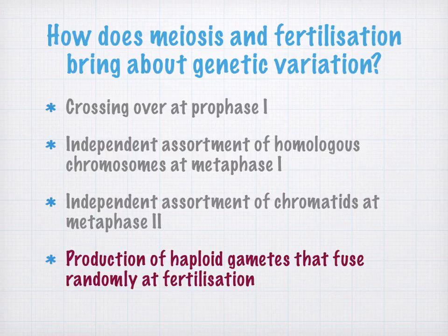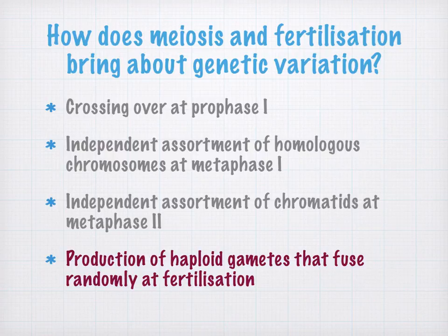Lastly, you have the production of haploid gametes that fuse randomly at fertilization. The haploid gametes produced by meiosis must fuse to restore the diploid state. Each gamete has a different makeup, and their random fusion therefore produces variety in the offspring. Where the gametes are from different parents, two different genetic makeups are combined, so you have even more variety resulting.